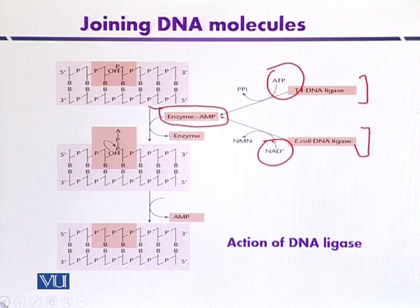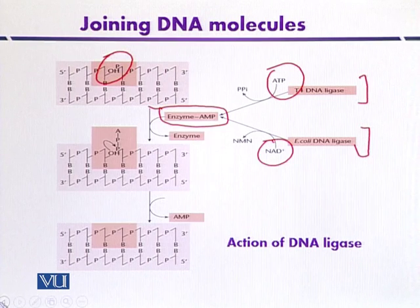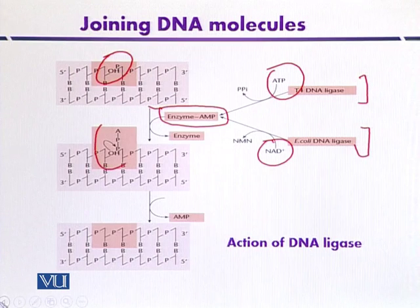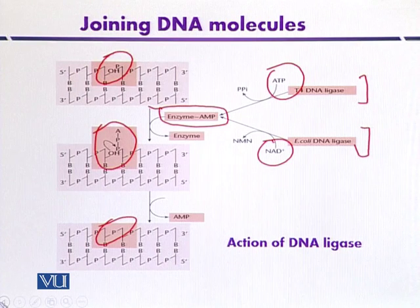The target site is the 5' phosphate and 3' OH group that needs to be bridged or ligated so that a phosphodiester bond is formed. The enzyme binds at this site and introduces the phosphodiester bond within the DNA molecule.